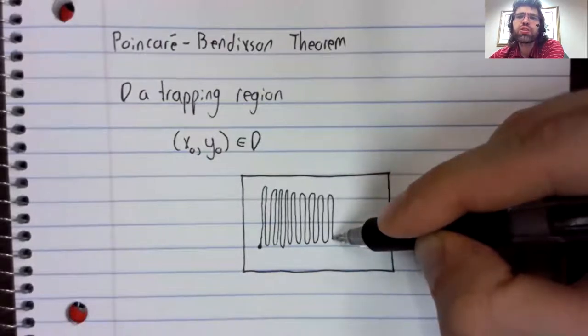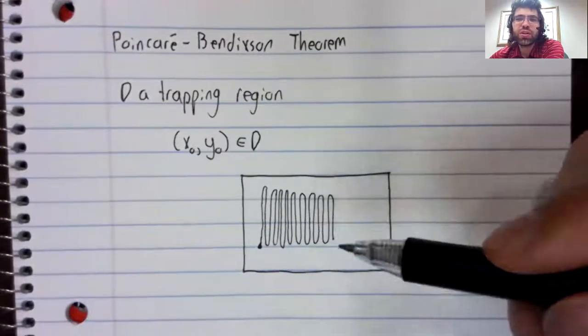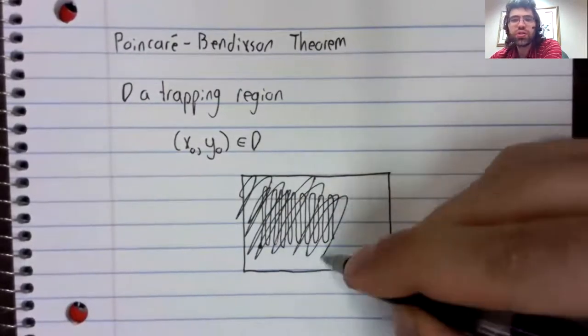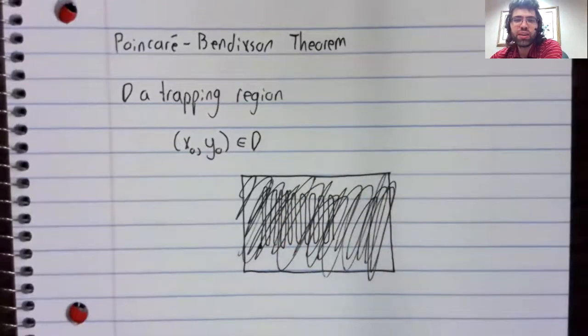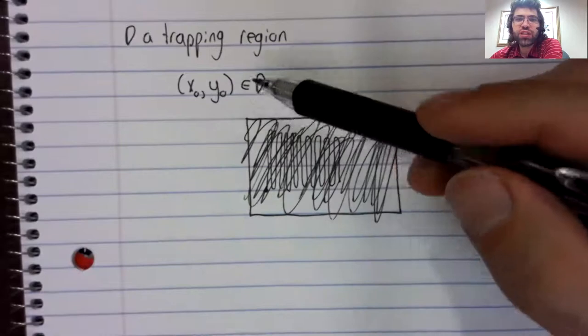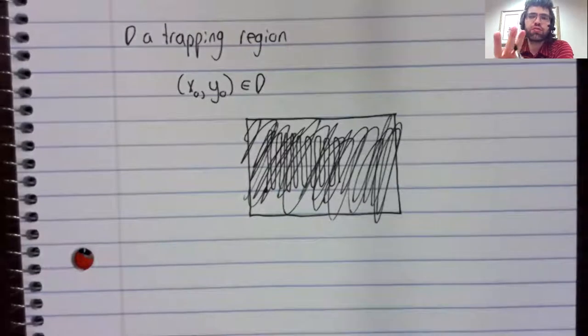Except no, the Poincaré-Bendixson Theorem says that we do not see complicated behavior. If a trajectory starts in a trapping region, there are only three things that could happen.